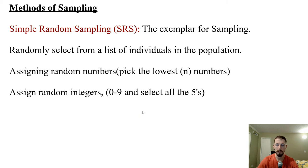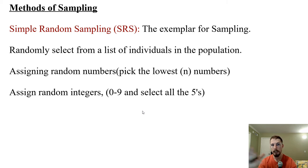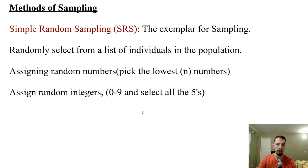The first sampling method is the simple random sample — the gold standard. This is like assigning a number to each person and then randomly selecting from the list of individuals in the population. For example, you can assign random numbers to all students, then select the lowest ones, or assign random integers 0 to 9 and select all the fives. We're basically assigning numbers and using some method to randomly select which ones are actually going to be sampled.